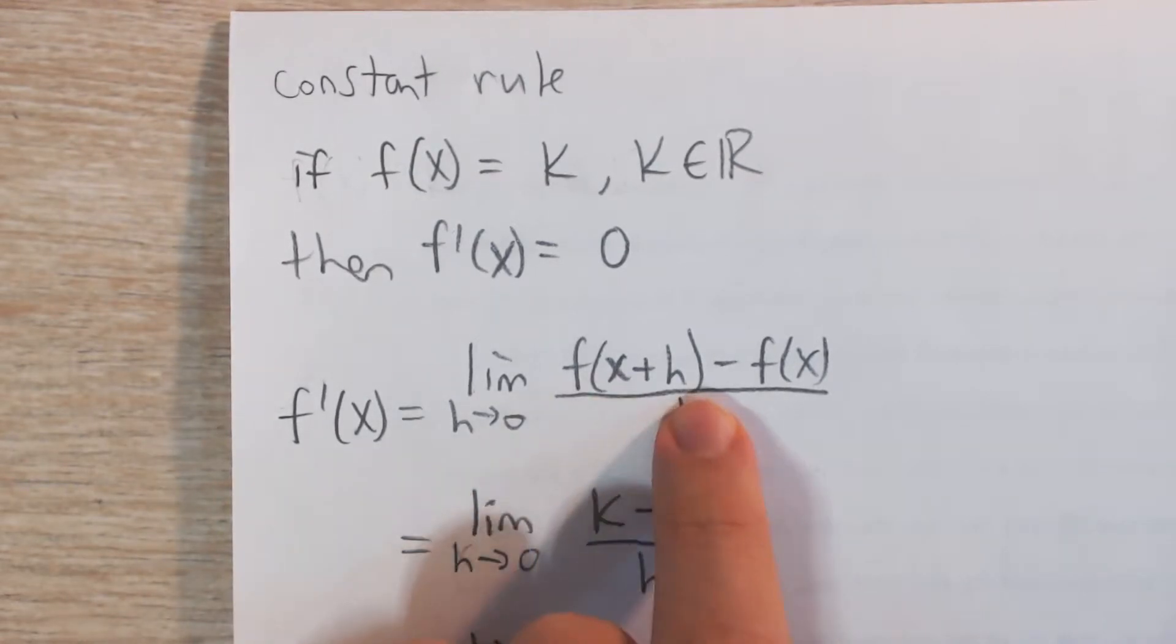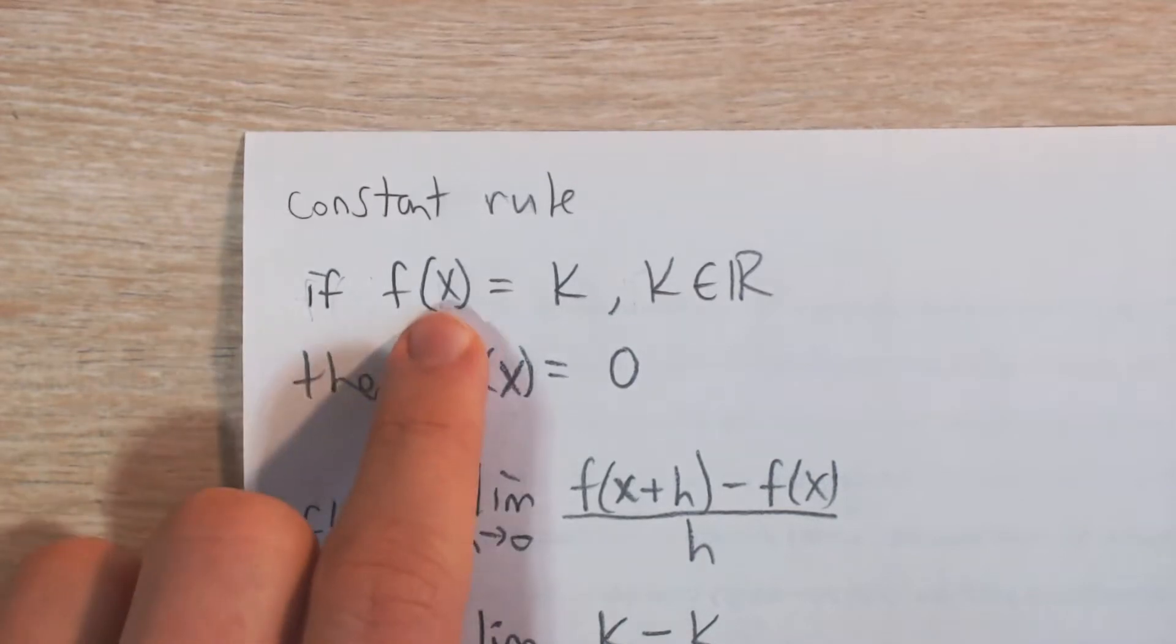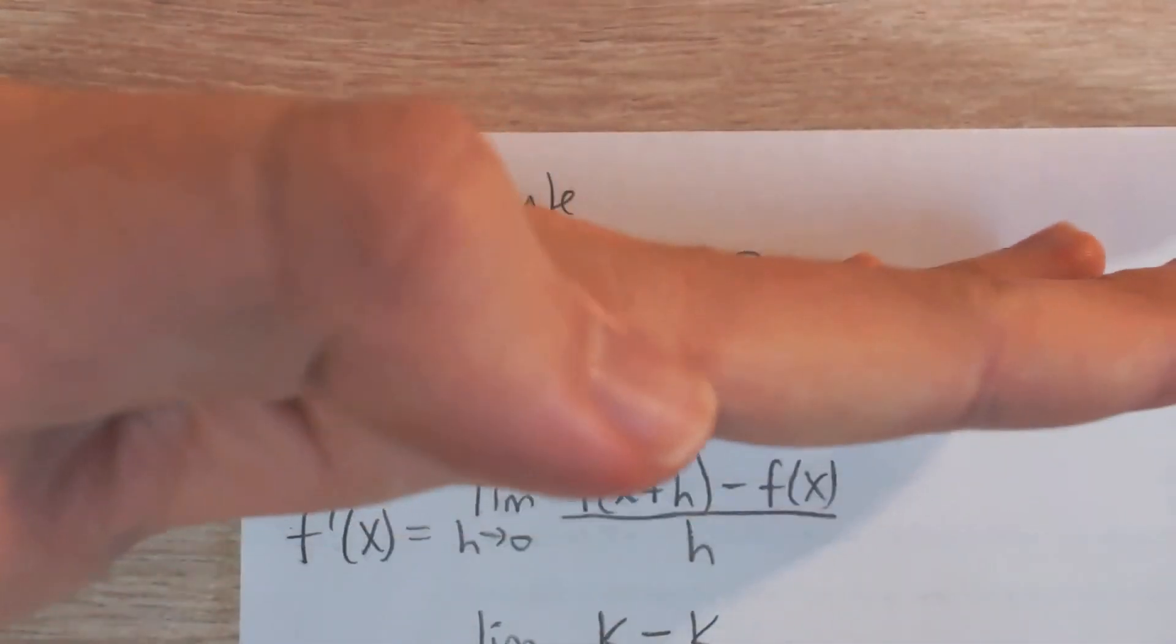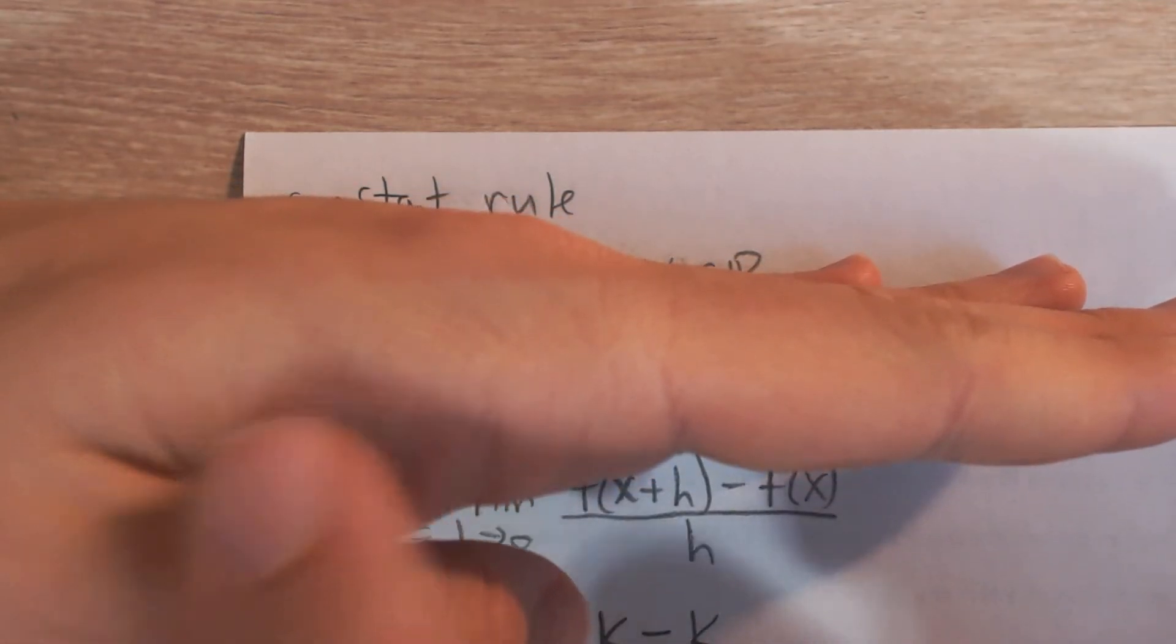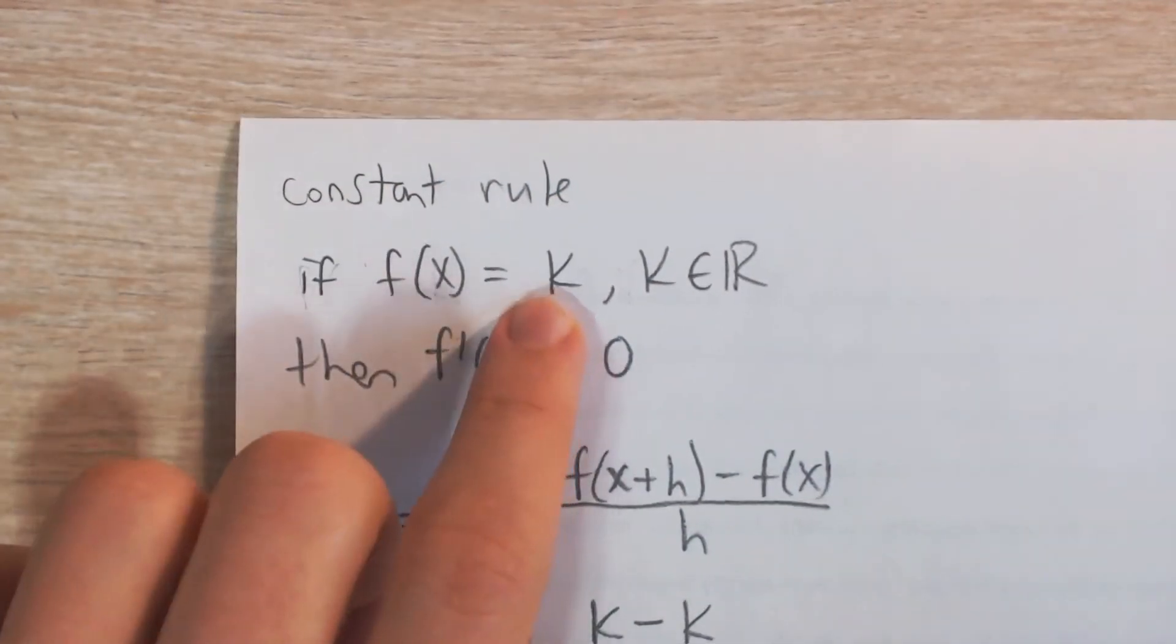What's f(x+h)? Well, the whole idea of a constant function is that no matter what x value you choose, no matter what input you choose, you're always going to get output of k. It's a horizontal line. So if you choose x here, you're going to get k. If you choose x here, you're going to get k. No matter where along that line, you're going to get the output of the same constant value.